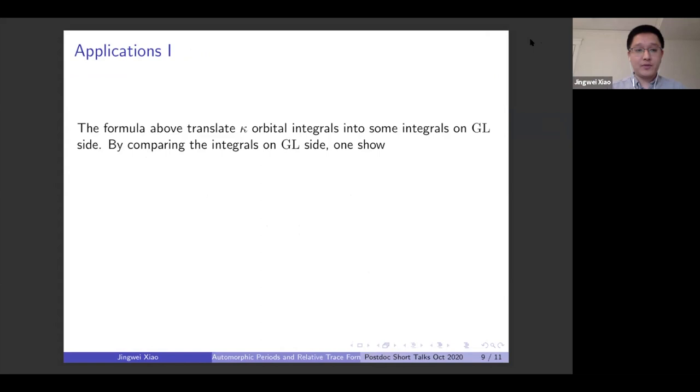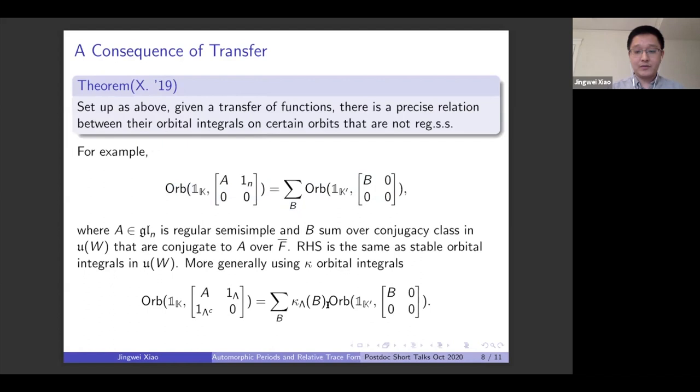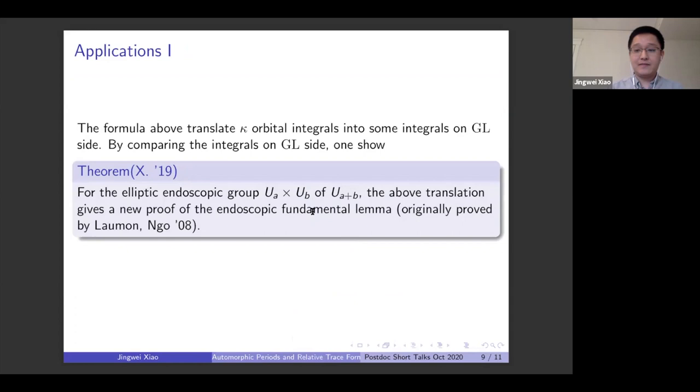So this is the formula. And I want to say why this can be useful. And the first is this formula can be used to give a reproof of the endoscopic fundamental lemma. This is the work of Laumon and Ngô in the case of unitary groups. The original proofs use the techniques in positive characteristic. But the previous formula has shown you can translate those orbital integrals to something on GL_n. And sometimes this can be easier to treat. And indeed we are able to show in the case of unitary groups, this formula is to give you a new proof of the endoscopic fundamental lemma.